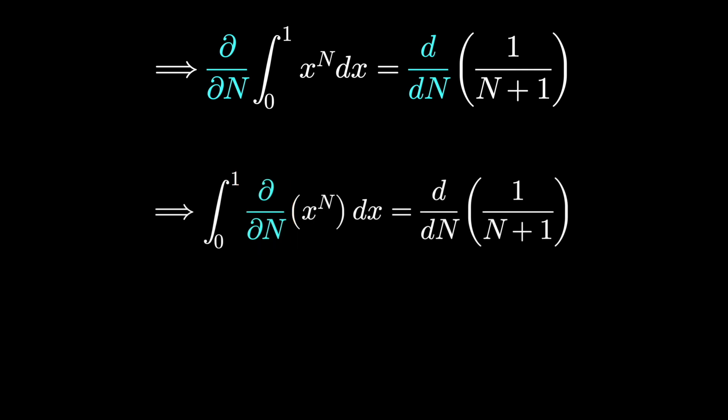Now be careful here, the variable of differentiation is n. So remember your rules for differentiating when the variable is the exponent. The derivative of x to the n with respect to n is x to the n natural log x.